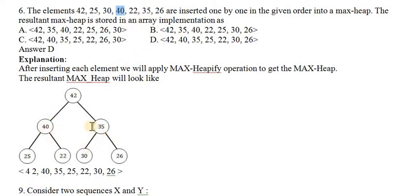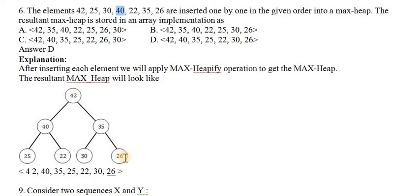Then 35 is coming, I am placing here. Previously 30 was there. 35 is greater than 30, so it is not in max heap. We are calling heapify process — this will swap 35 and 30. So 35 is placed here and 30 goes there. Finally, 26 is coming, I am placing here. Comparing with 35 — it is lesser, so no issue. We have constructed the max heap.